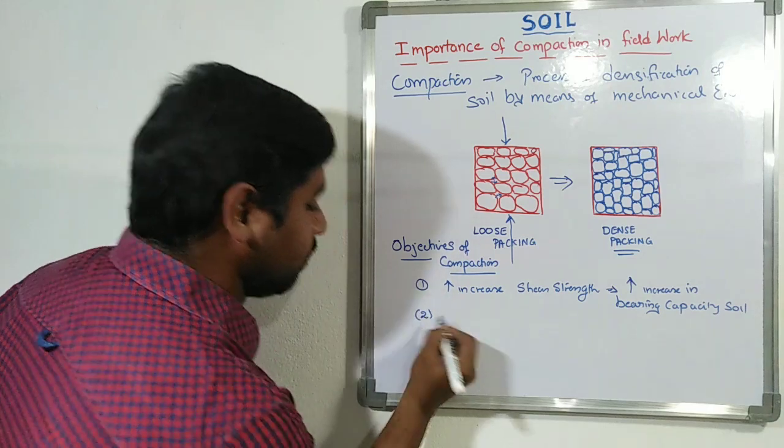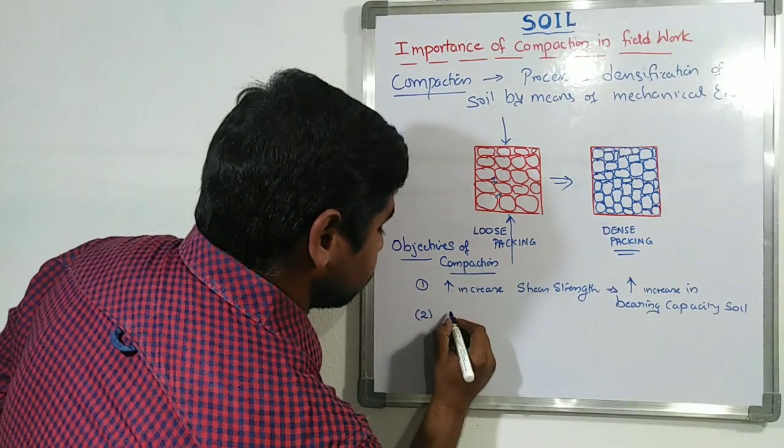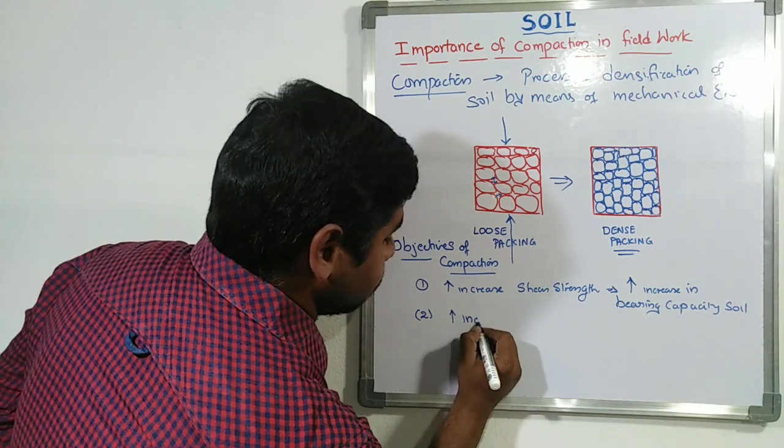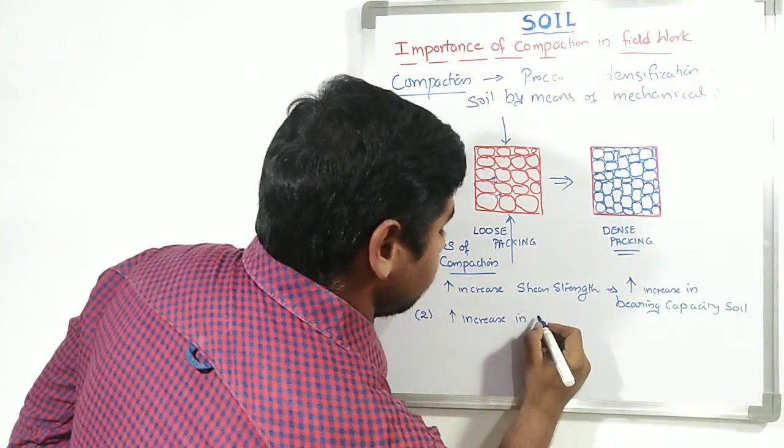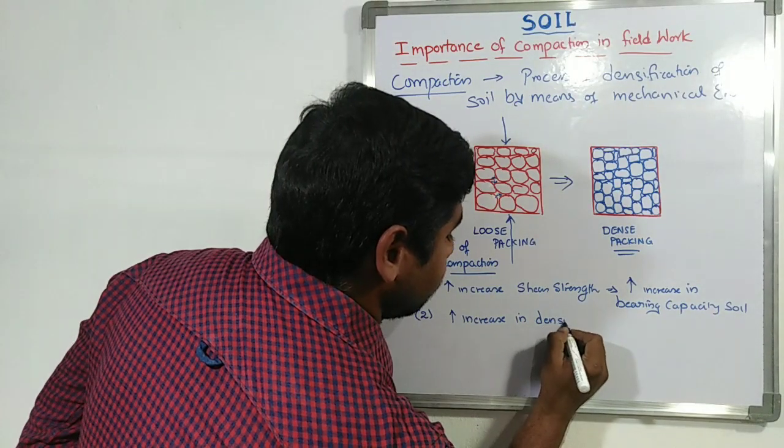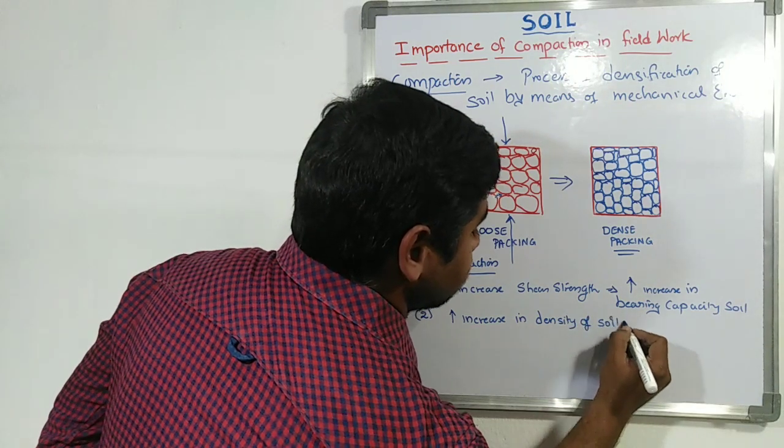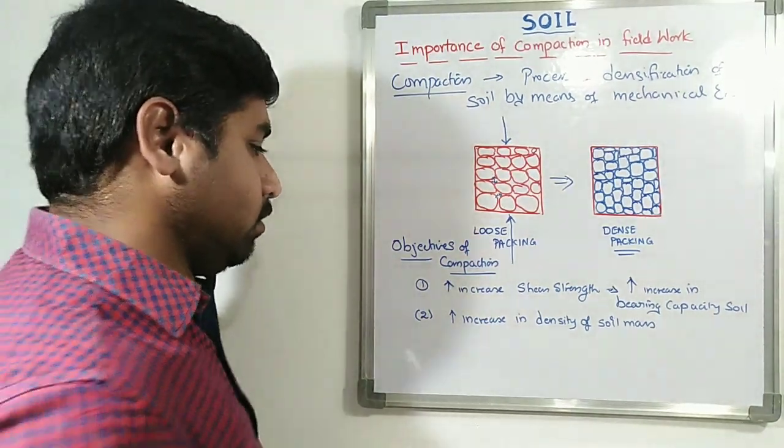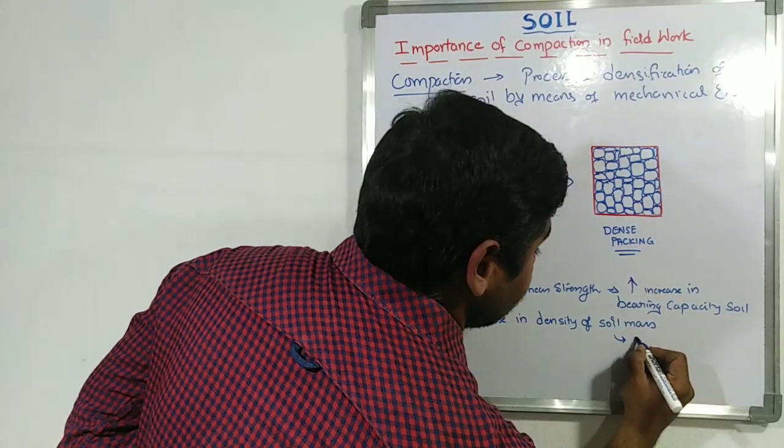That is the first one. Second one, increase in density of soil mass. Increase in density of soil mass, which is because of reduction of pore spaces.